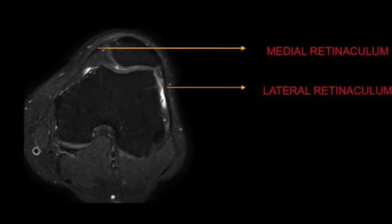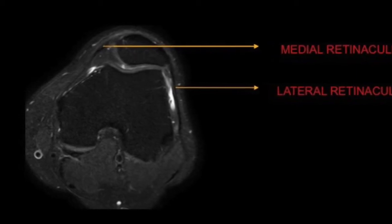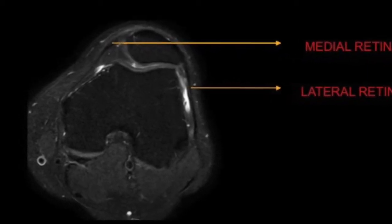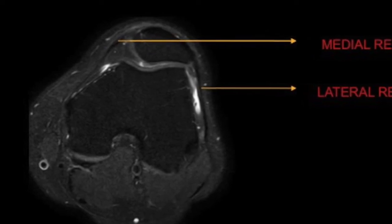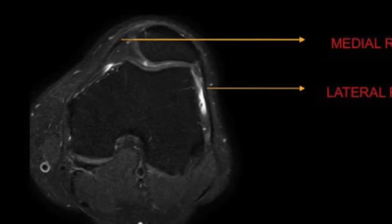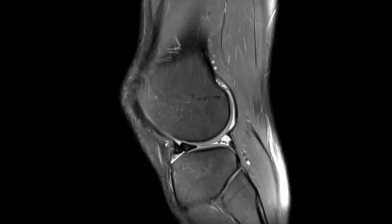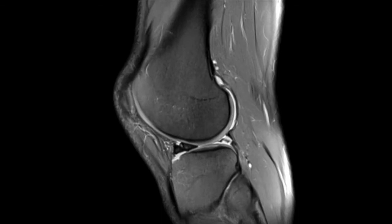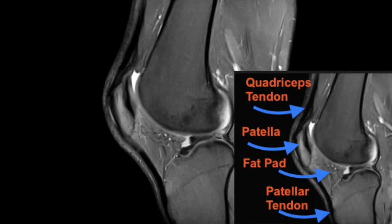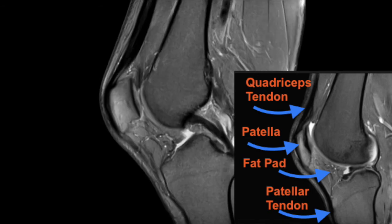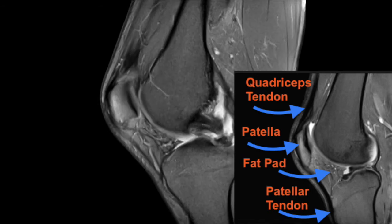The extensor apparatus is the main knee extensor and stabilizer of the patellofemoral joint. The quadriceps tendon and patellar tendon are well seen in the sagittal images as low intensity structures, as we see here. The infrapatellar fat pad is a very important region — this triangular fat pad is located just below the patella, posterior to the patellar tendon.